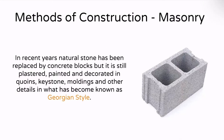Because limestone rock is porous, in recent years that stone has been replaced by the use of concrete blocks, also called cinder blocks. However, once the cinder blocks are laid down, there's still plastering that takes place over them, followed by painting and decoration with details like quoins, keystone moldings, and other details. This style — using cinder blocks, plastering over them, and decorating with quoins, keystones, and moldings — is called the Georgian style.